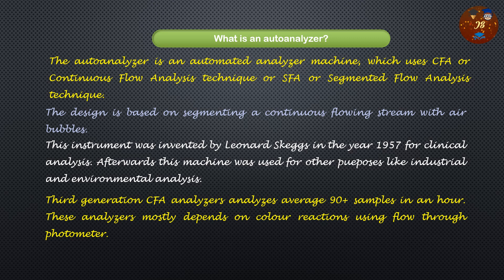Third-generation — the most advanced CFA analyzers — can process 90 or more samples per hour, showing how fast the instrument is. These analyzers mostly depend on color reactions using flow-through photometry, so it is essentially a photometric analysis.